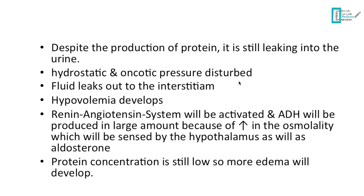After patients develop proteinuria, the liver produces more protein but it keeps leaking into the urine. So the hydrostatic and oncotic pressure will be disturbed. The main controlling factor of oncotic pressure is protein — so when protein decreases, oncotic pressure decreases and fluid leaks out. The main function of oncotic pressure is to maintain fluid inside the vessels, so when it decreases the fluid leaks out into the interstitial space and the patient develops edema.